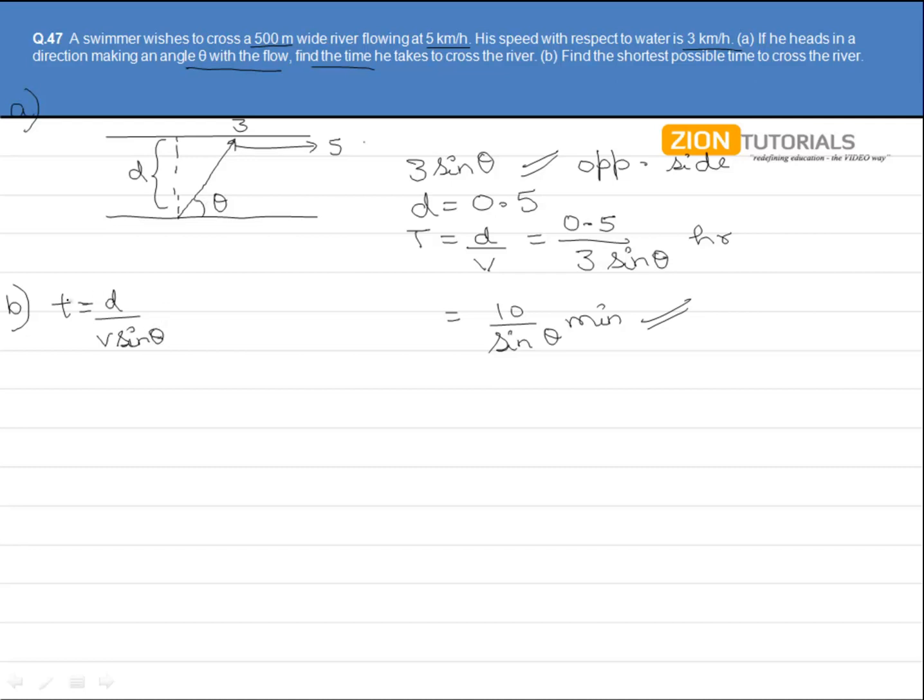Now, for the time to be minimum, that is the least, sin theta should be maximum, which is 1. So, taking sin theta equals to 1, we get time equals to d by v. That is the distance d which has been given as 500 upon 3 into 1000 over 60 giving us 10 minutes.